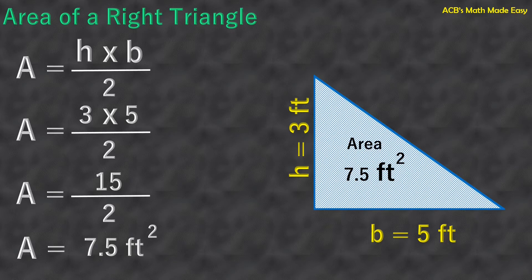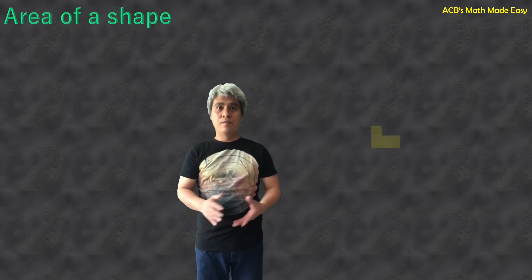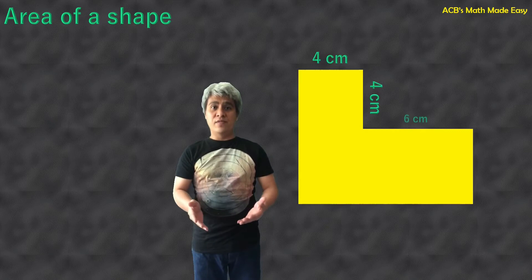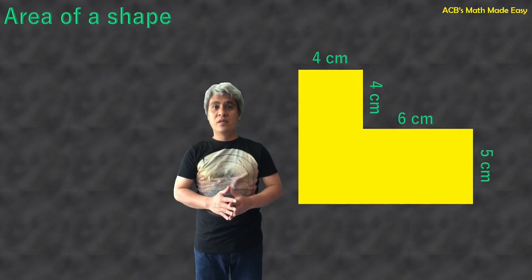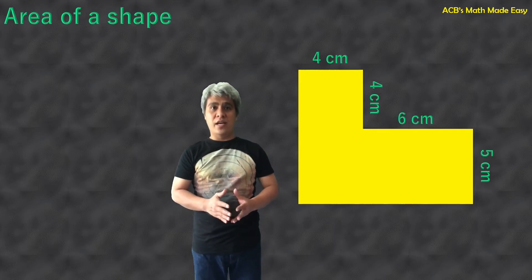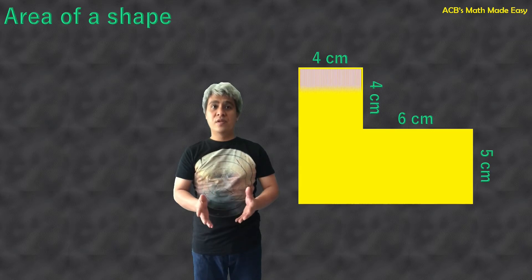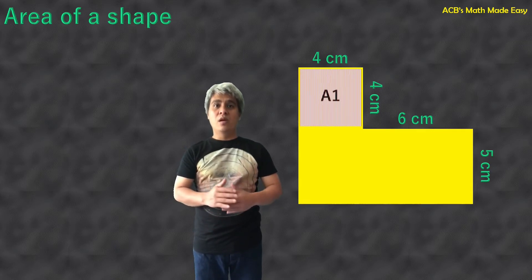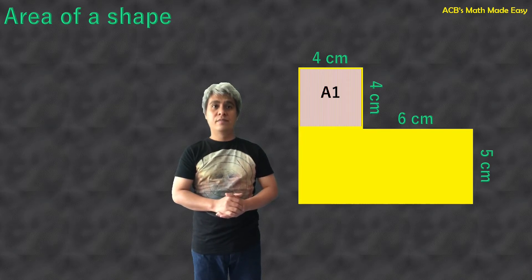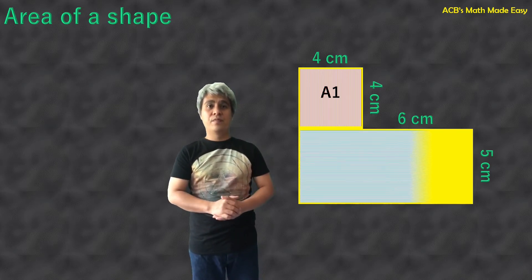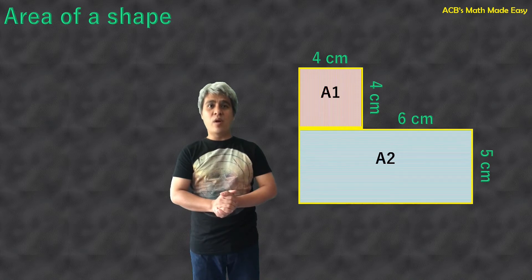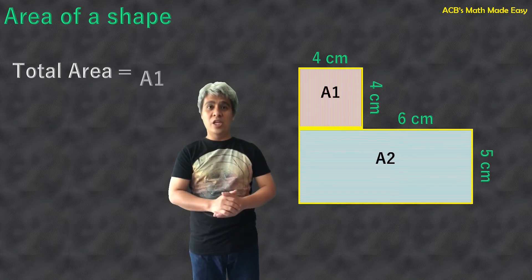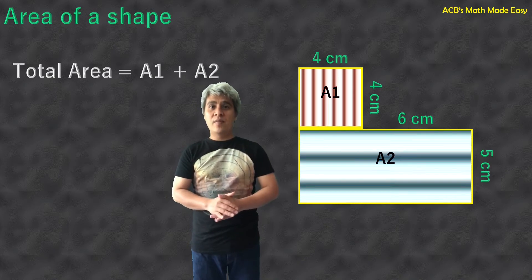Next, this example will be different. This is our shape, and these are the measurements of the sides: 4 centimeter, 4 centimeter, 6 centimeter, and 5 centimeter. How are we going to calculate its area? First, look at this shape — we will call it Area 1. And the other shape we will call Area 2. So, you have to add Area 1 and Area 2 to get the total area of the shape.